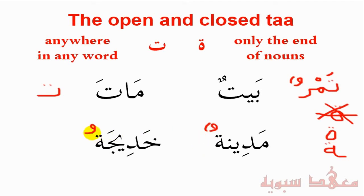Just a point there: female names don't take a tanween — they don't get a ḍamma tanween or a fatḥa tanween, and they don't take a kasra. But we'll speak about this later on — you don't need to know that at this stage. And that completes this lesson. Walḥamdulillāhi Rabbil-ʿĀlamīn.